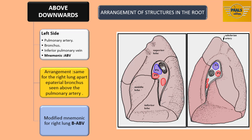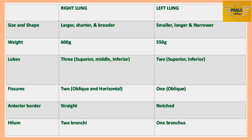A brief comparison of the right and left lungs: in size and shape, the right lung is larger, shorter, and broader, while the left is smaller, longer, and narrower. In weight, the right is about 600 grams and the left about 550 grams. The right lung has 3 lobes — upper, middle, and lower — while the left has 2 — upper and lower. The right lung has 2 fissures, horizontal and oblique, while the left has 1 oblique. The right lung has a straight anterior border, while the left has a deeply notched anterior border. At the hilum, the right lung has 2 bronchi — the eparterial and hyparterial — while the left lung has 1 bronchus.